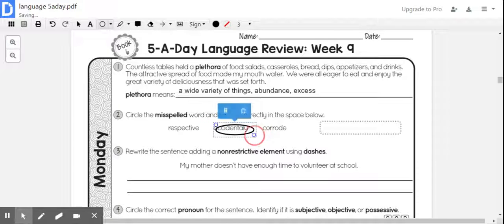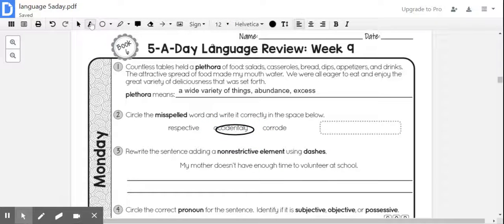Accidentally is the word that is misspelled. It should have two L's: A-C-C-I-D-E-N-T-A-L-L-Y. Accidentally.